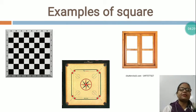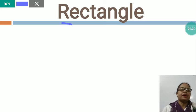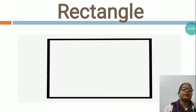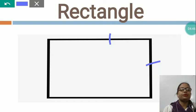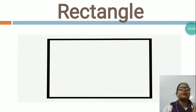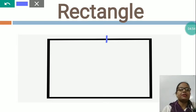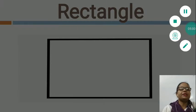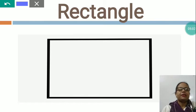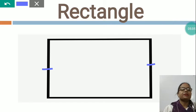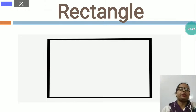Now I would like to teach you the next shape. This is RECTANGLE. You can see this is the picture of rectangle. In this also there are four sides — one, two, three, four. But only parallel sides are equal: the top and bottom sides are equal, and the left and right sides are both parallel and equal.